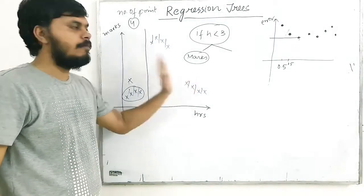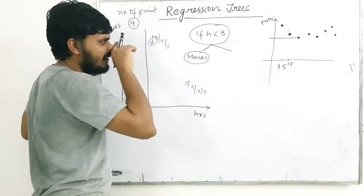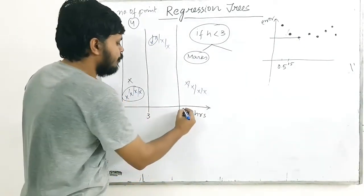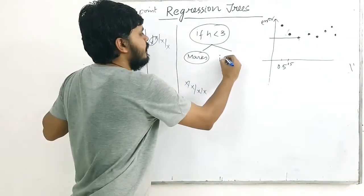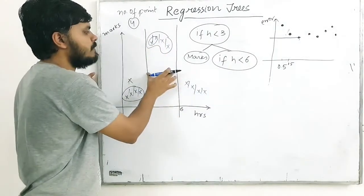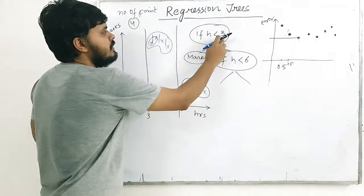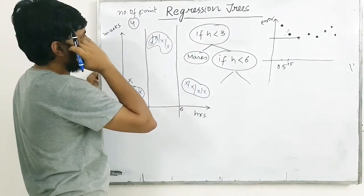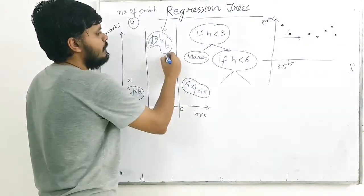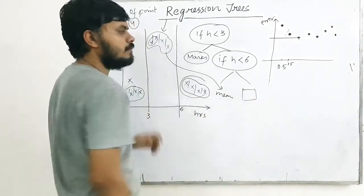So on one side it's finalized. On the other side we repeat the same process: pick pairs, find the best split again — let's say that turns out to be at 6 hours. After splitting at 6, if both sides have only 4 points, no further splitting happens. So if hours < 3: predict mean of those points. If hours > 6: predict mean of those points. If between 3 and 6: predict mean of that group. That is how you do it.